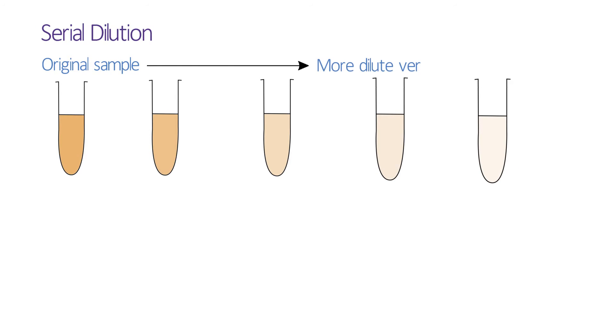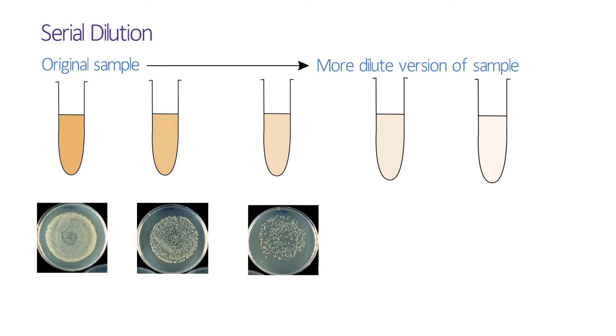We're going to do this by setting up a serial dilution. The basic principle is we're going to set up a series of tubes, each of which contains a more dilute version of the sample. We'll then plate each different dilution onto a different agar plate and allow the bacteria to grow overnight.